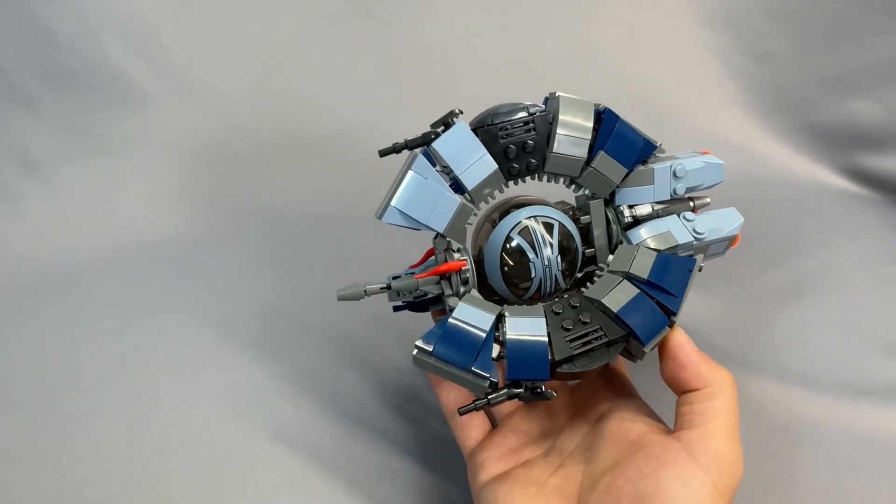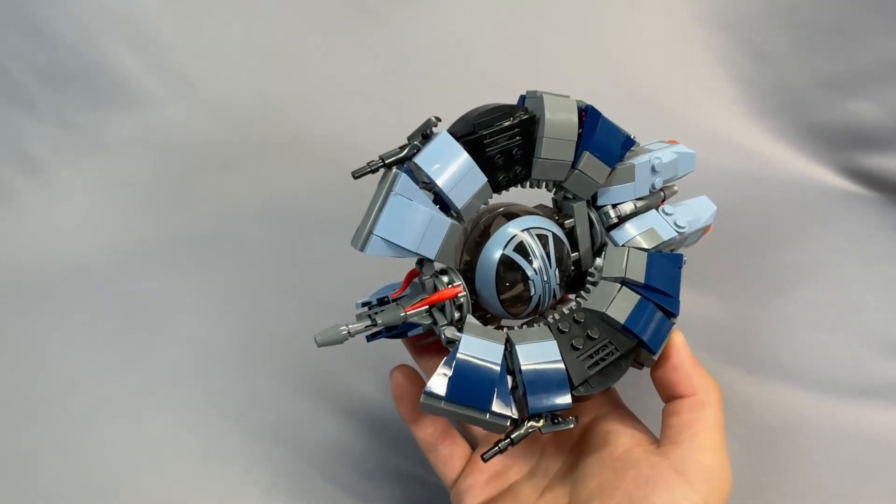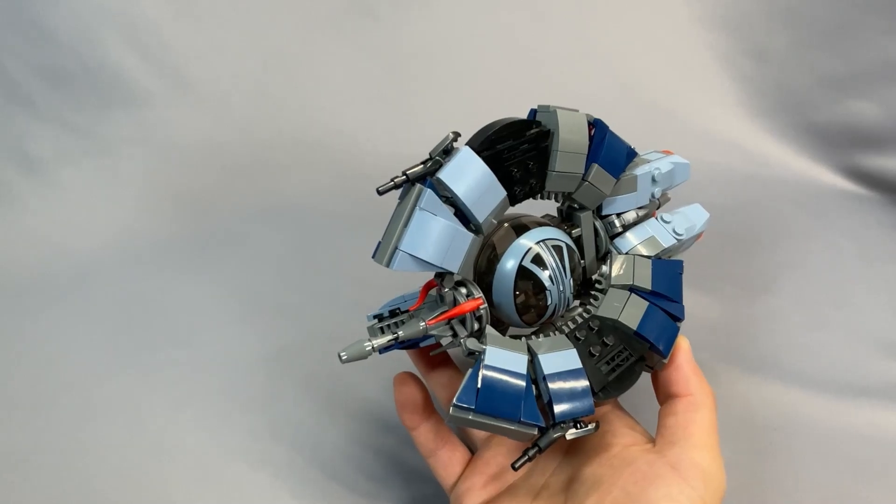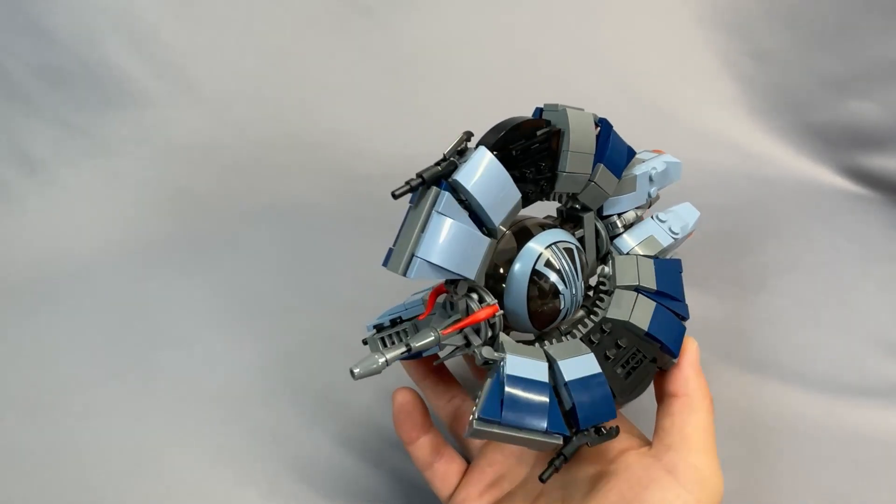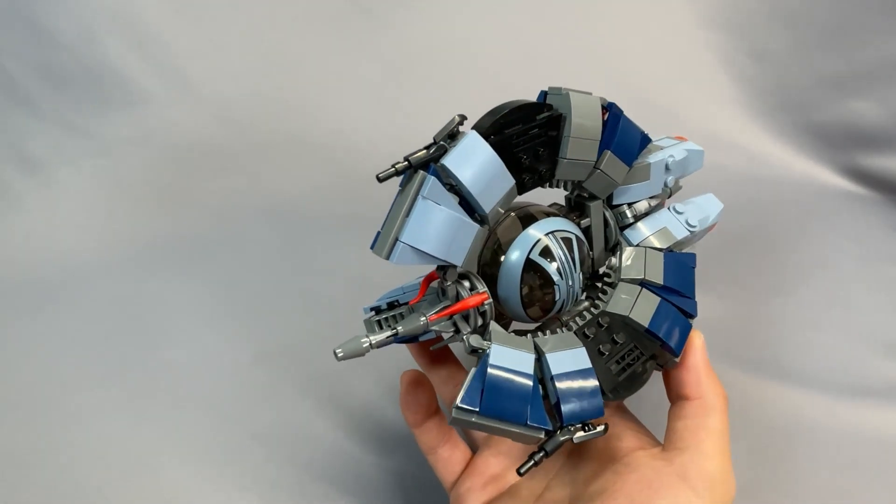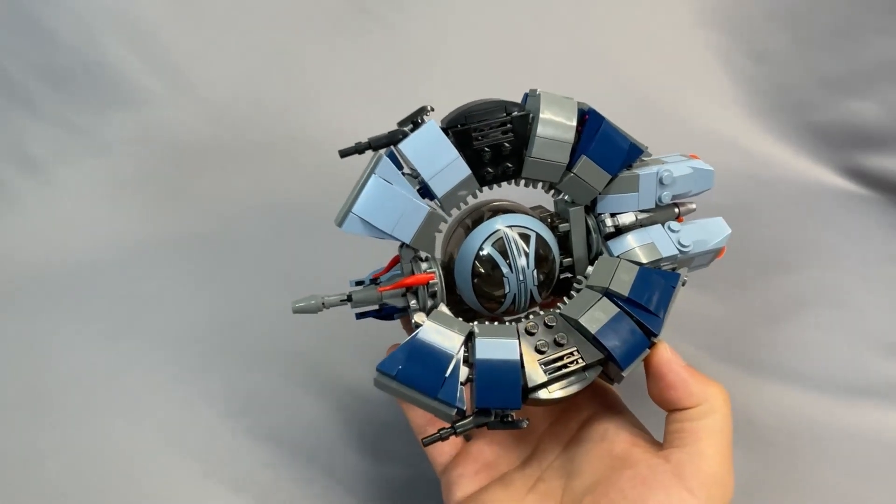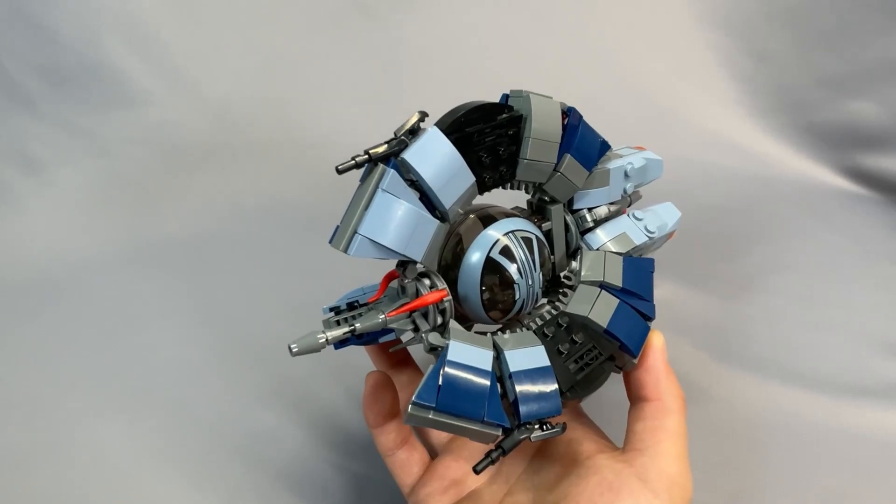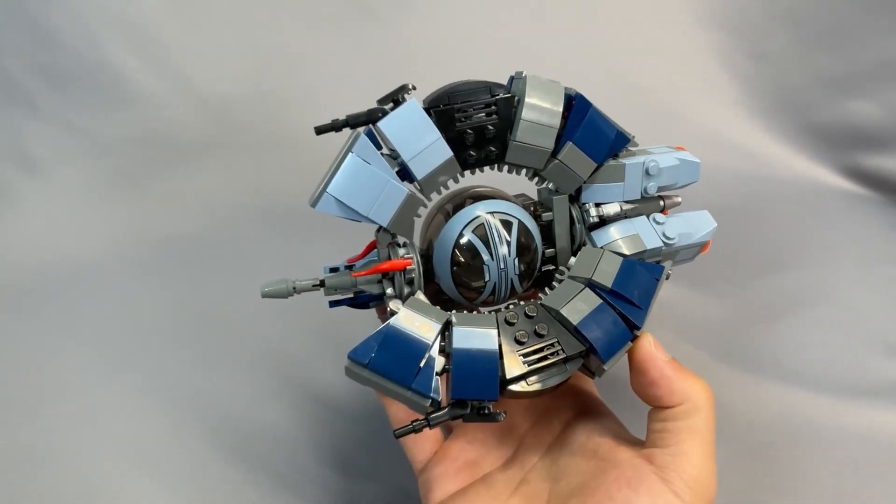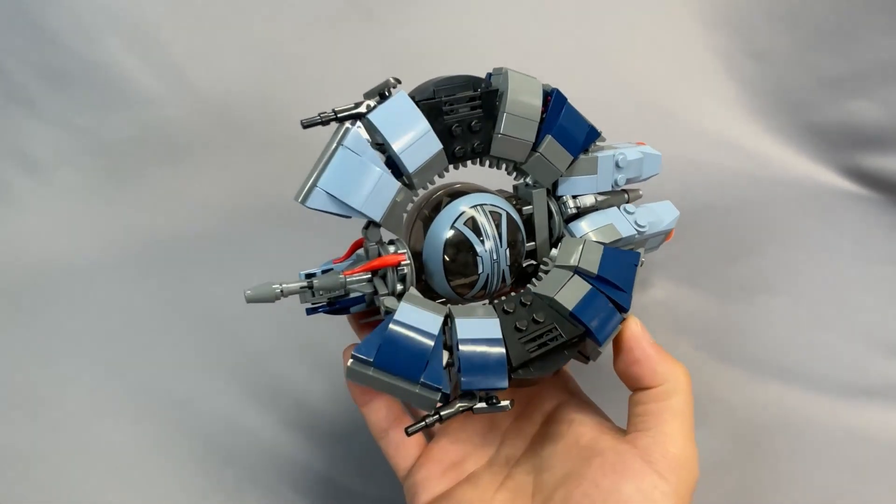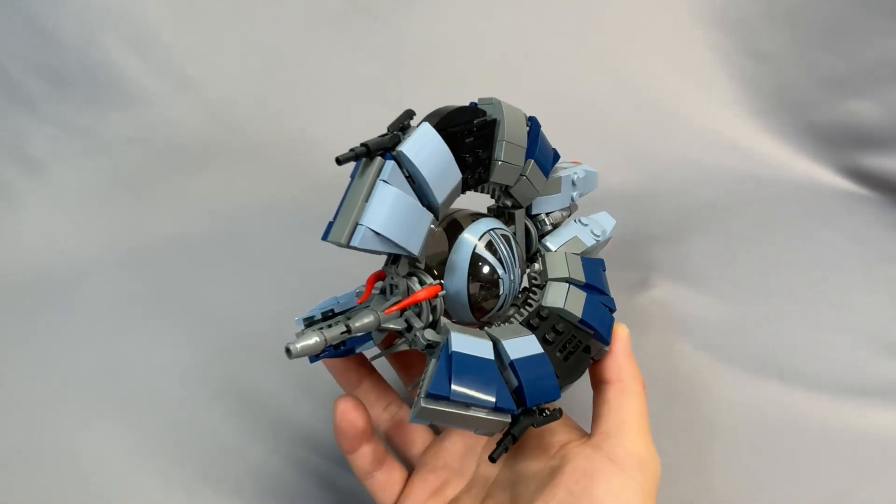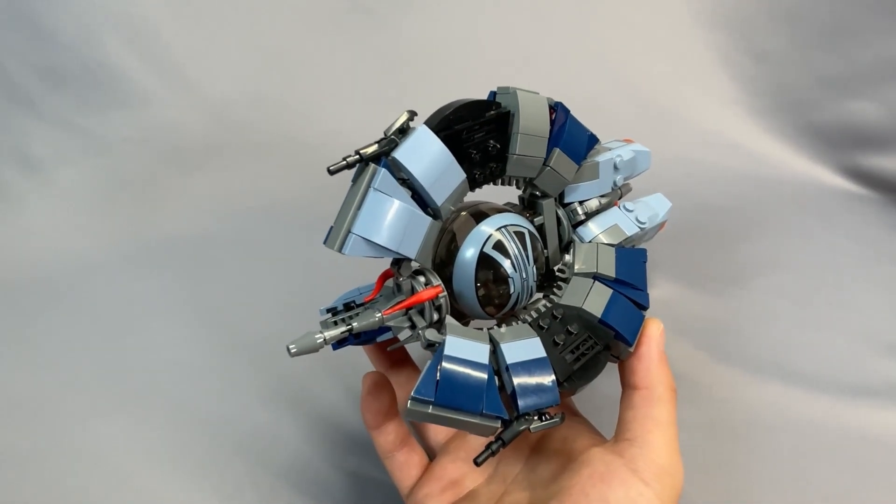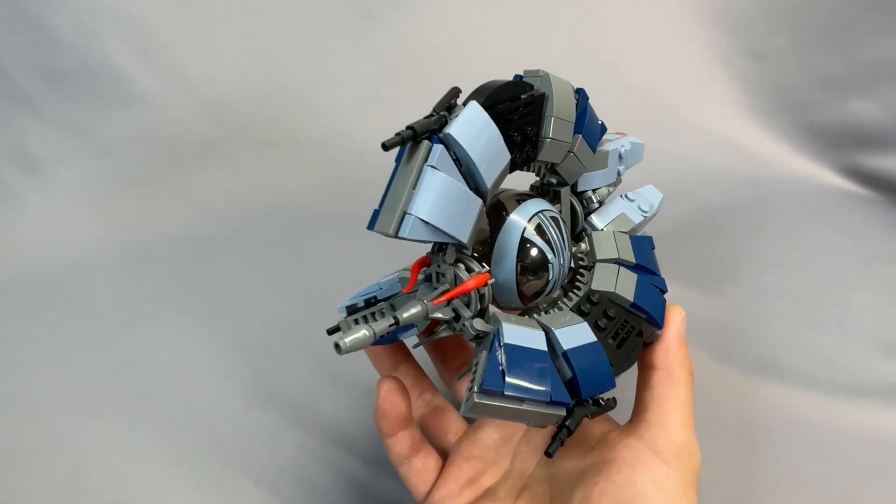But to end this section on a good note, the designer stated that the instructions were done quickly to get the model on Rebrickable, which is fair enough. And I also appreciated the specific guidance in making the connection for the fins in step 113, which is very helpful. I think if the issues with sequencing get sorted, then these instructions will be very good. Simply due to the trickiness of the fin connections, I think this model is best suited for builders with a bit of experience, as I can definitely see this being frustrating for newer builders.